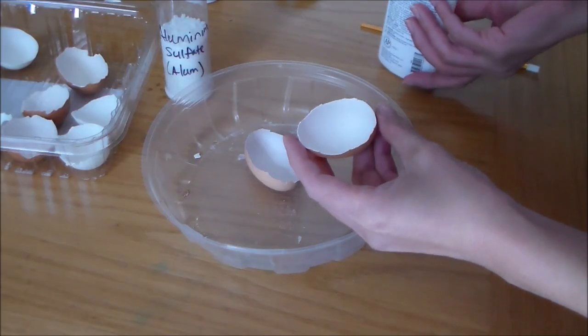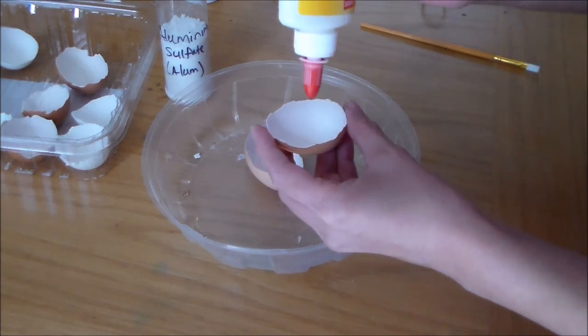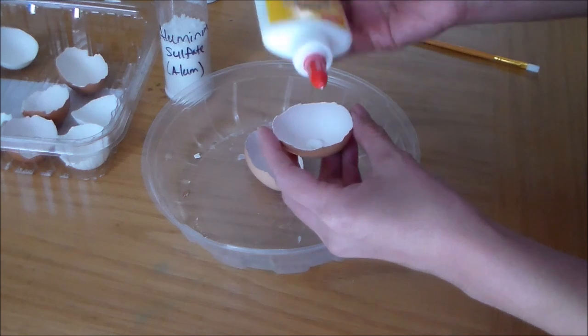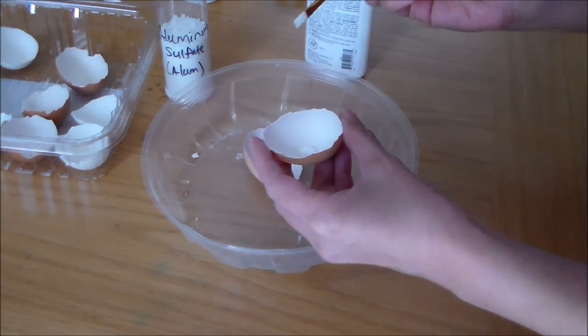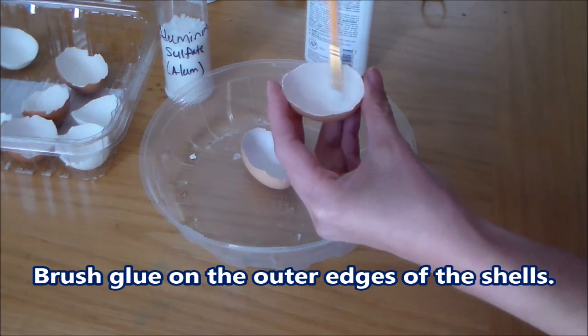Our eggshells are now clean and dried and I did take out the membrane but you don't have to. So we're going to put a couple of drops of school glue. Make sure you use your paintbrush to spread the glue throughout the interior of the shell.